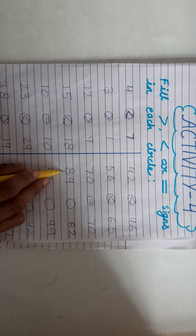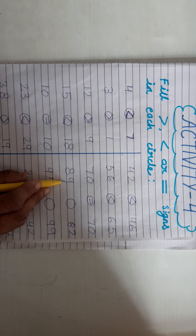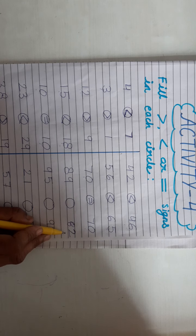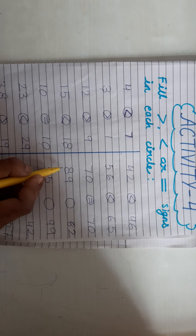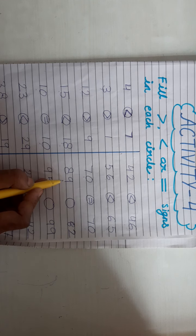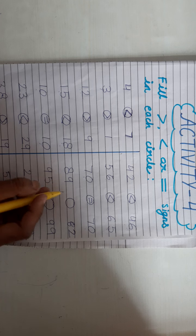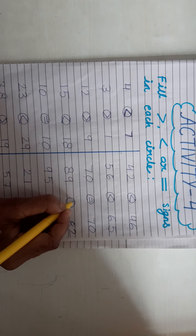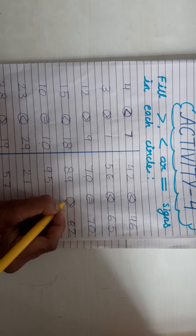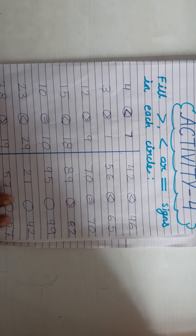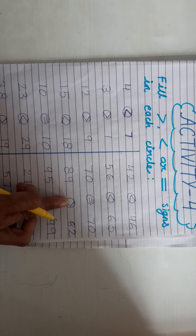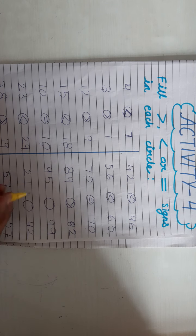This is 89 and this is 82. Which number is larger? 89. तो मुह किस की दरफ बोलेंगे — हम 89 की दरफ। यह मुह खोल दिया हमने 89 की दरफ। 89 इसके मुह के अंदर चला जाएगा। (So we open the mouth towards 89.)